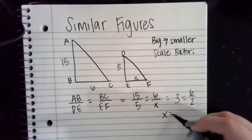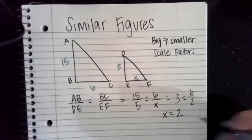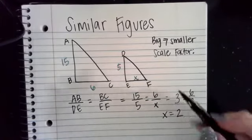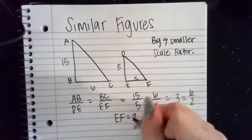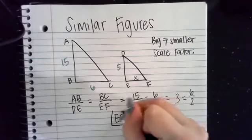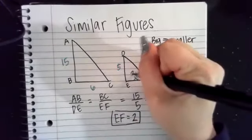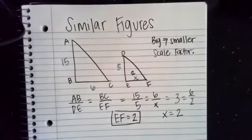So that means X is equal to 2. Or EF, if we wrote it as the side of the triangle, EF is equal to the distance of 2. So this corresponding side is equivalent to 2.